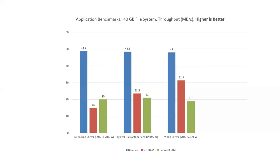We also performed application benchmarks, where data was mapped from a logical volume to an off-the-shelf HDD and application workloads were run on top of a 40 gigabyte file system. The applications considered are a file backup server with a 30/70 read-write split (write-intensive), a typical file system workload with a 60/40 read-write split, and a video server application with a 70/30 read-write split. As expected, DETWORAM outperforms SQORAM for the backup server since DETWORAM is more optimized for writes. But for the file system workload and the video server workload, SQORAM outperforms DETWORAM due to locality-preserving reads. For the video server case, SQORAM is only 50% slower than the baseline.